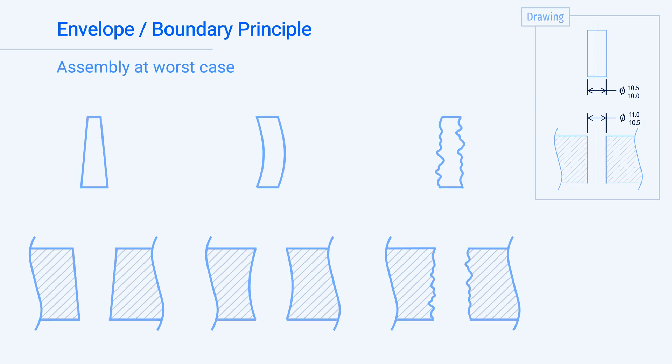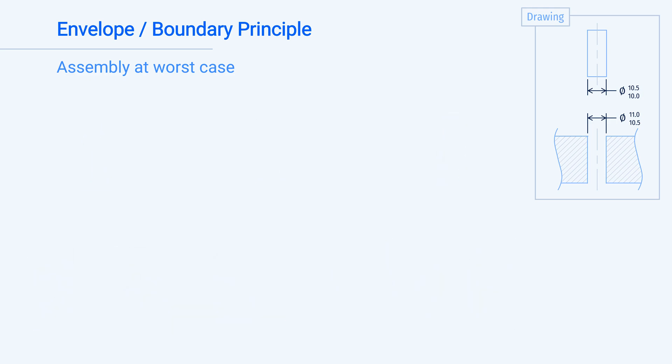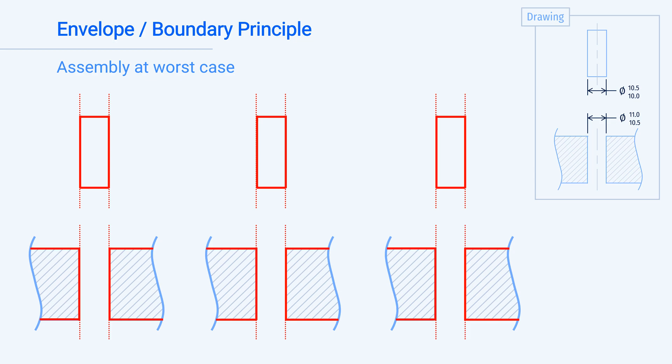This means that when we are designing parts to assemble together, we can disregard how parts that are actually manufactured will vary and instead design using a feature's perfect form and its MMC size. This is the boundary or envelope principle because the part cannot extend beyond the boundary of its perfect form and MMC size.